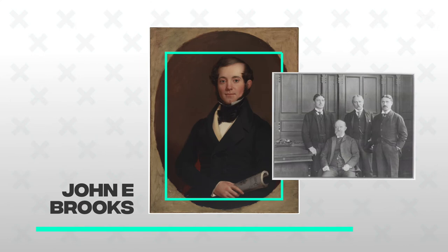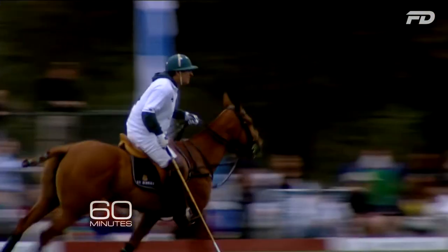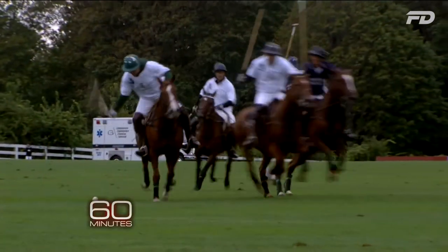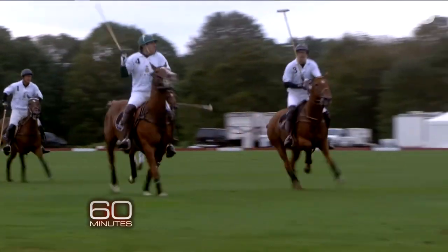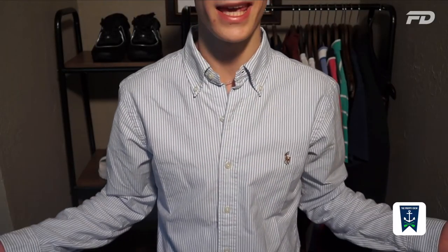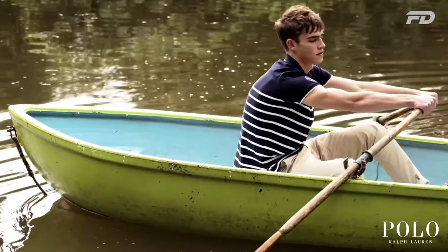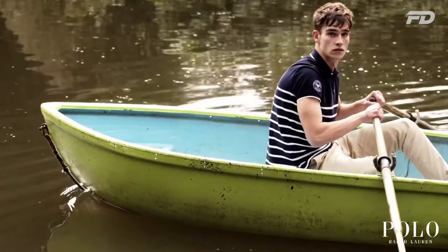It was actually a man by the name of John E. Brooks that transitioned the button down shirt from a functional piece into a fashion statement piece. After watching a match in England, he loved the idea so much that once he went back to the United States, he immediately started manufacturing the button down shirts and actually called them polo shirts. What we commonly think of as polo shirts today don't have these buttons, and that name has definitely transitioned — but it's a fun way to see the lineage and history of the button down shirt and how it's moved over time.